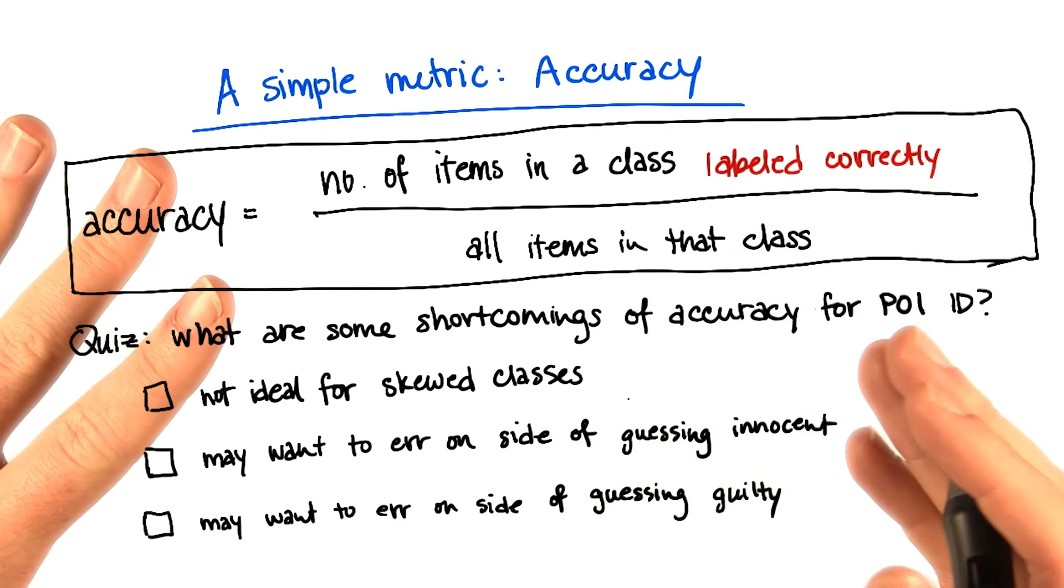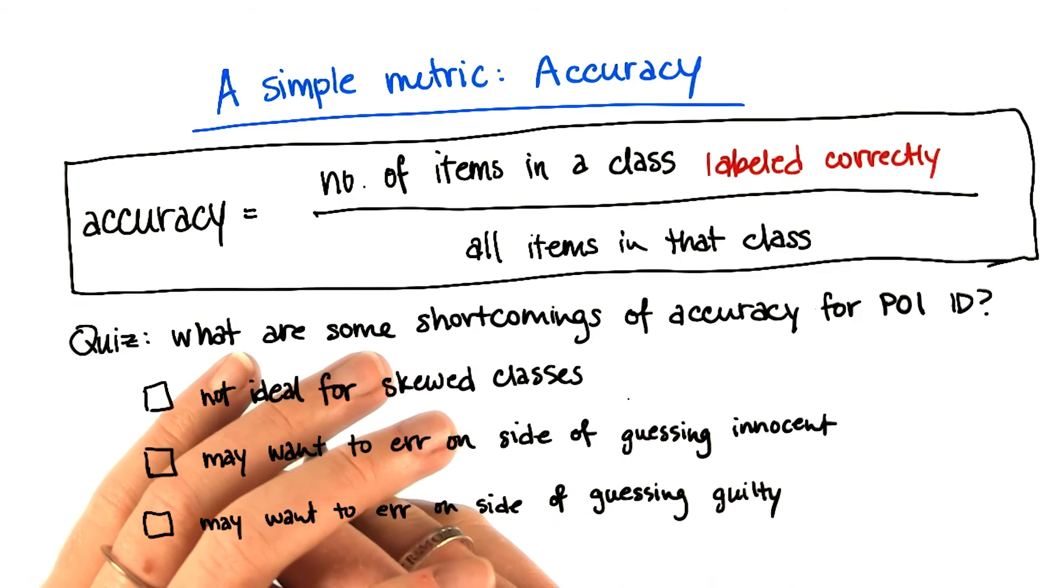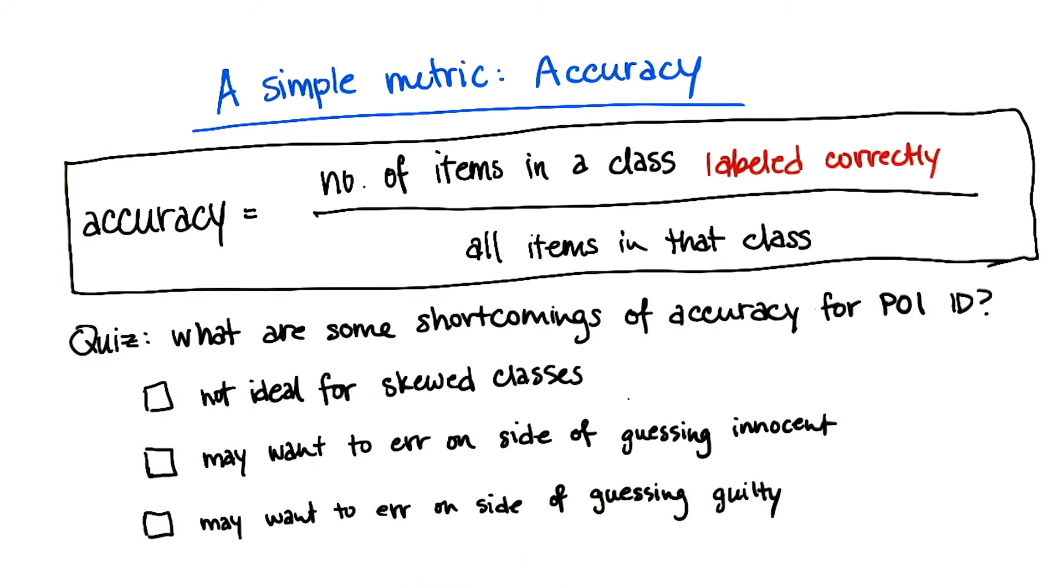And so in that case, what you would want to do is make sure that you get as many people who were actually involved in the fraud as possible identified. Even if it comes at the cost of identifying some people who were probably innocent. Because those innocent people will then be investigated and cleared in later rounds of the investigation. And that accuracy might not be the right metric if that's the goal that you're going for, in trying to identify persons of interest.